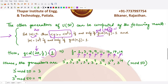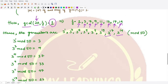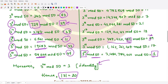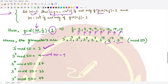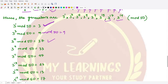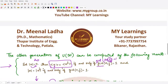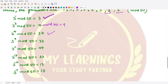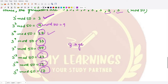The generators are 3^1, 3^3, 3^7, 3^9, 3^11, 3^13, 3^17, and 3^19 mod 50. Computing these: 3^1 = 3, 3^3 mod 50 = 27 — wait, 3^3 = 27 but referencing our earlier table, 3^3 = 27 and 3^7 gives 37, 3^9 gives 33, 3^11 gives 47, and so on. In total, there are 8 generators for this group.